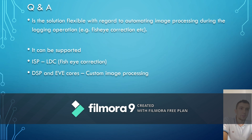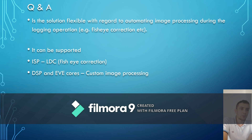The second question was: is the solution flexible with regard to automating image processing during the logging operation, for example fisheye correction? Yes, this is possible. The current solution can be expanded so it can support additional video processing during logging operation. For example, the ISP can support lens distortion correction and can correct distortion created by fisheye lenses. Also, there are available DSP and embedded vector engine cores which can provide additional processing power for some custom image processing required by customers.